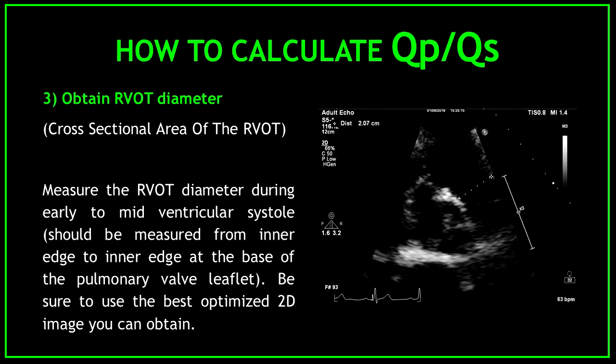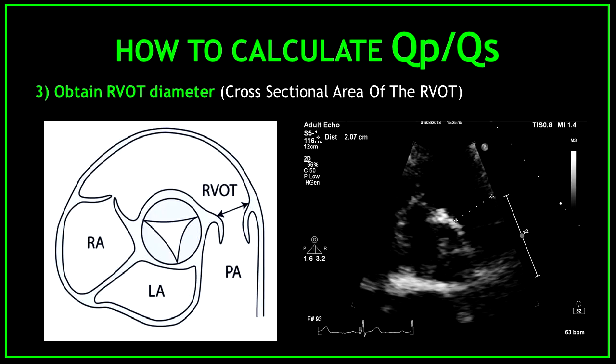Number three: obtain the RVOT diameter. This is to obtain a cross-sectional area of the RVOT. Measure the RVOT diameter during early to mid-ventricular systole, from inner edge to inner edge at the base of the pulmonary valve leaflet. Be sure to use the best optimized 2D image you can obtain. We need to obtain this measurement in order to get a cross-sectional area of the RVOT.